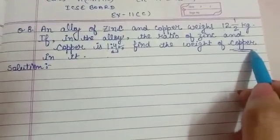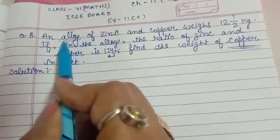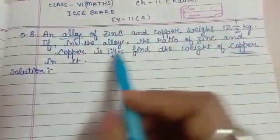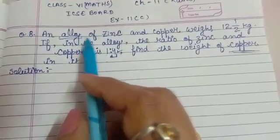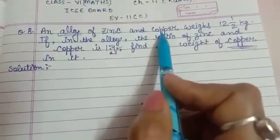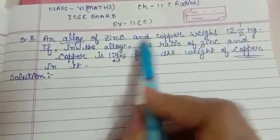Now you will be curious to know what is alloy. Alloy is the mixture of metals or non-metals. You can say alloy is a mixture of metals. So zinc and copper both are metals. As you will move further in your physics, chemistry, you will get familiar with these terms.